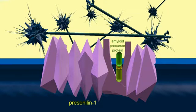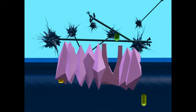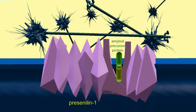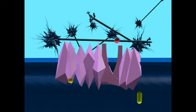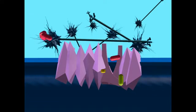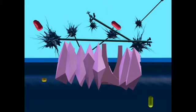Under normal conditions, the amyloid precursor protein is cleaved into fragments which can be degraded completely in neuron cell membranes by the enzyme gamma secretase, which includes the protein presenilin 1 or presenilin 2. These two proteins are homologs and can be substituted for each other.